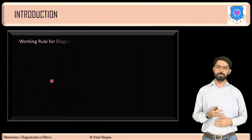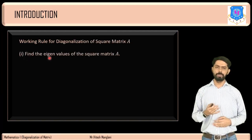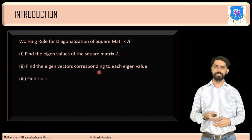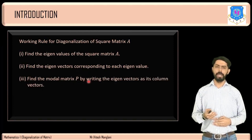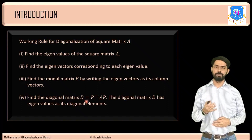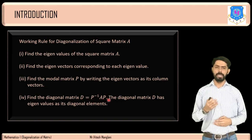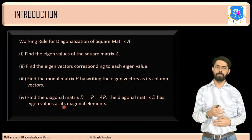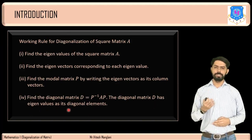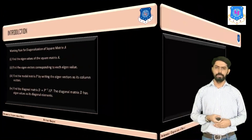The working rule for diagonalization of square matrix A is as follows. Step 1: find the eigenvalues of square matrix A. Step 2: find the eigenvectors corresponding to each eigenvalue. Step 3: find the modal matrix P by writing the eigenvectors as its column vectors. Step 4: find the diagonal matrix D = P inverse AP. The diagonal matrix D has eigenvalues as its diagonal elements.